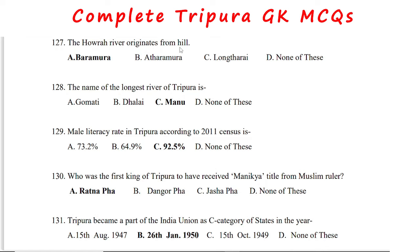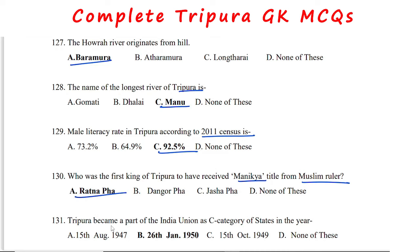The Haora river originates from the Baramura hills. The longest river of Tripura is the Manu. The male literacy rate in Tripura according to the 2011 census is 92.5%. The first king of Tripura to receive the Manika title from a Muslim ruler was Ratnafa. Tripura became part of the Indian Union as a C-category state on 26th January 1950.